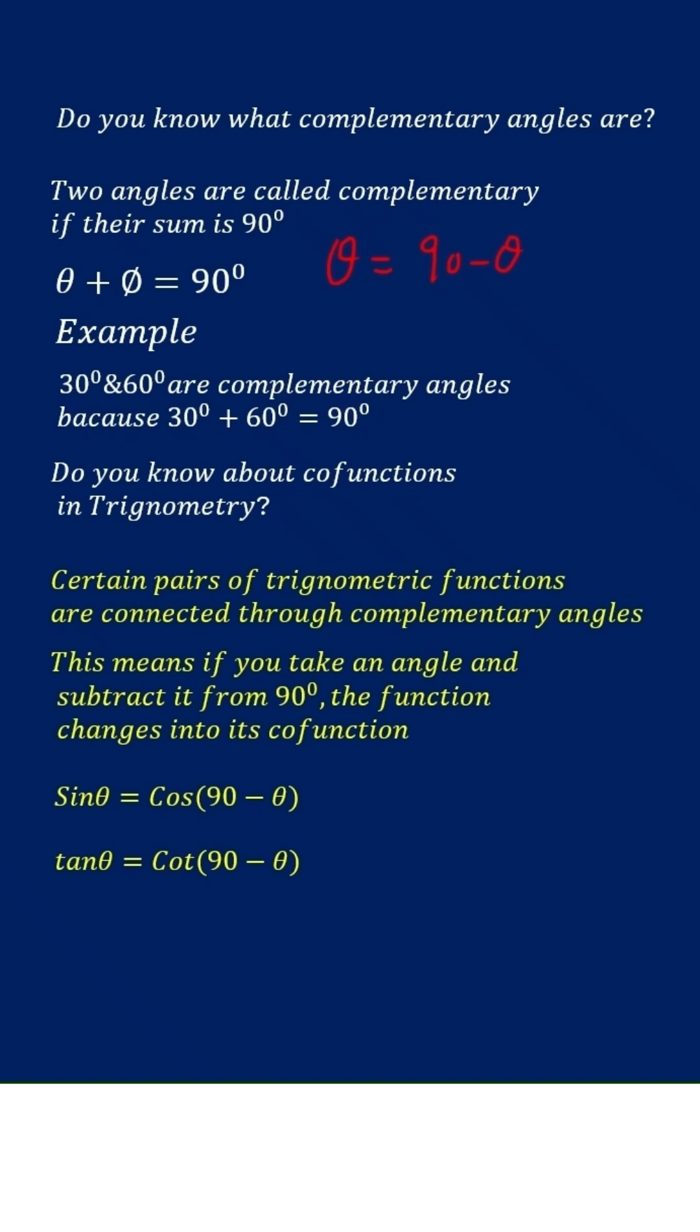If you take an angle, suppose theta, this is sine theta, and you subtract it from 90, the function changes from sine to cos. This is the co-function of sine.